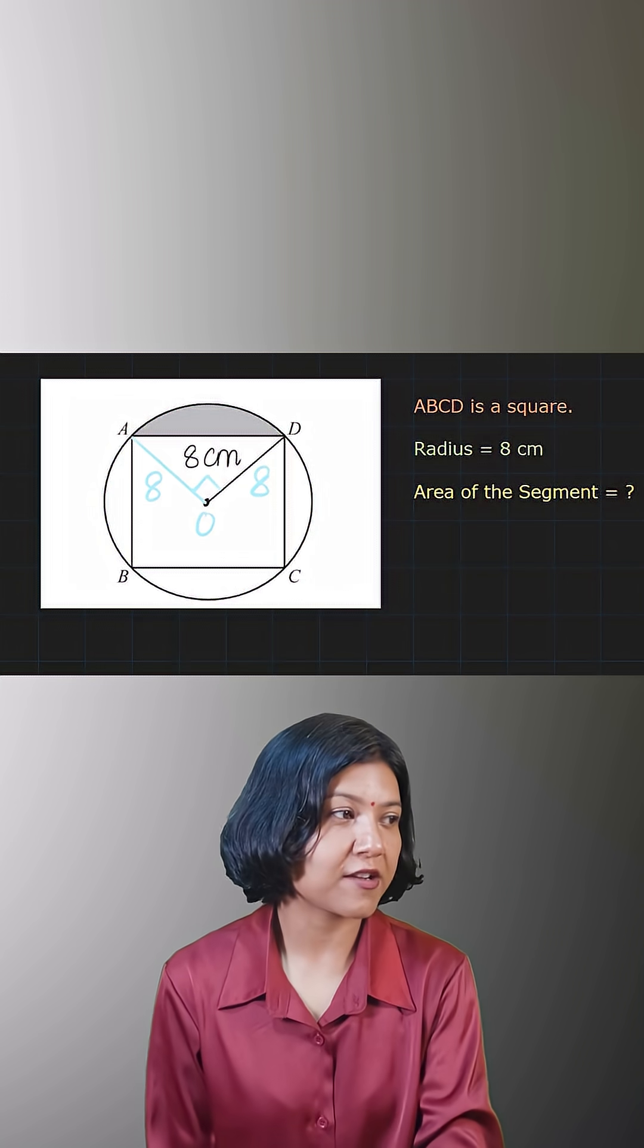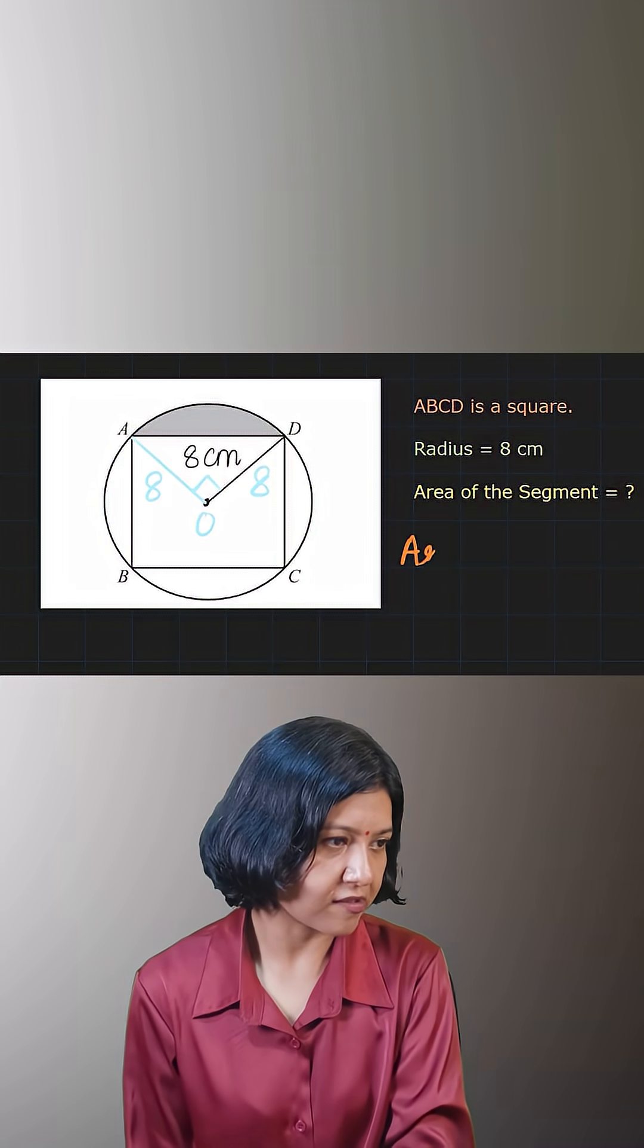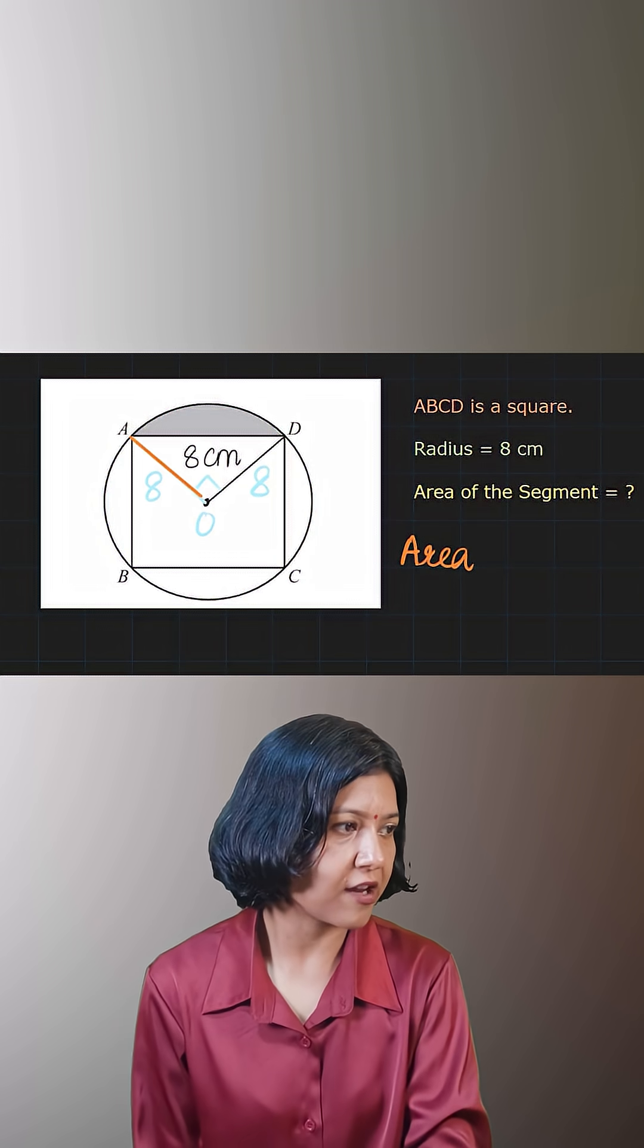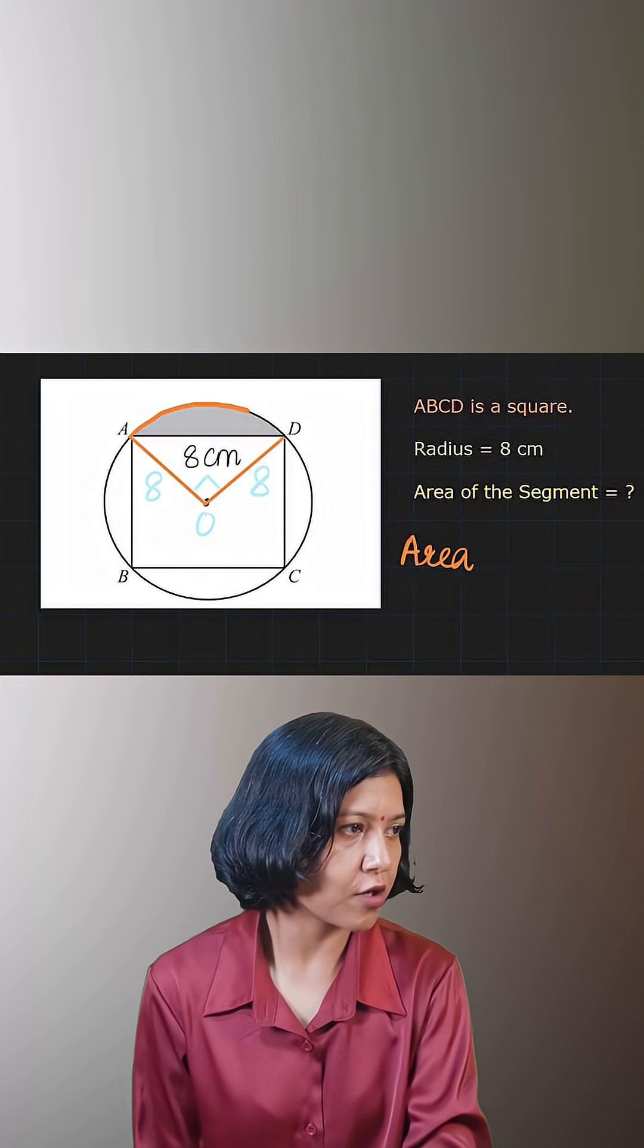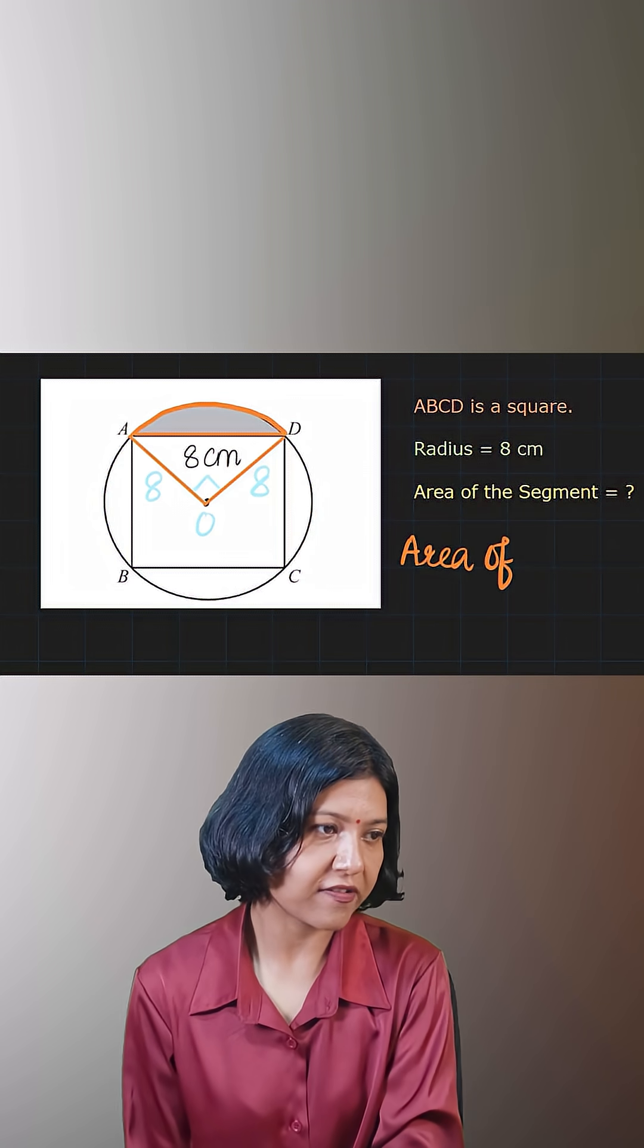So now I've told you segment area can be simply found out by taking the area of the sector, which is like the pizza slice. From the area of the sector, you want to remove the area of the triangle. Okay, let's do that. Area of sector.